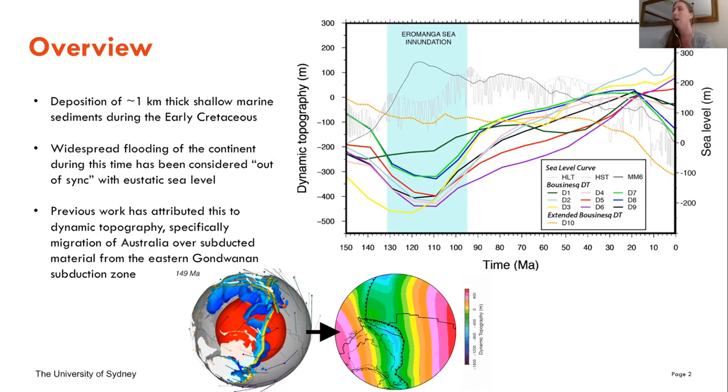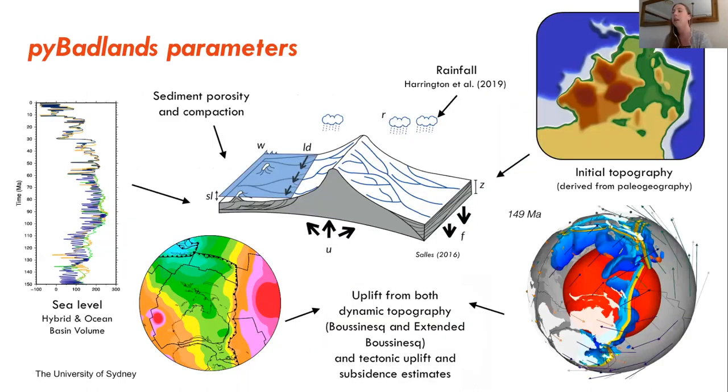With the climate Badlands models we incorporate obviously the sea level and dynamic topography, but we also incorporate uplift from tectonic events. We have rainfall incorporated, so we use the Harrington et al. values for this set of models. We incorporate sediment compaction and an initial topography that has been derived from the Geoscience Australia paleogeography from 150 Ma, which is our model start time.